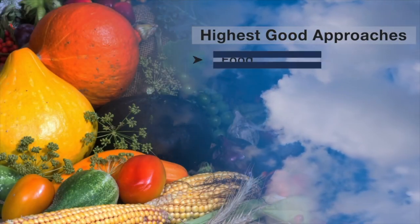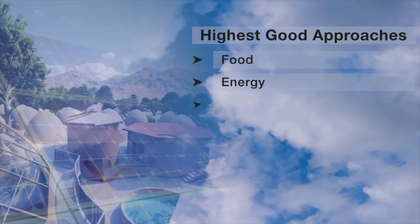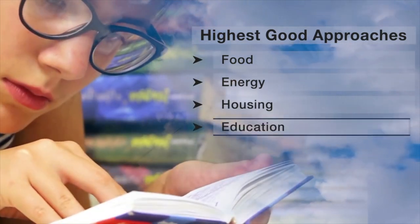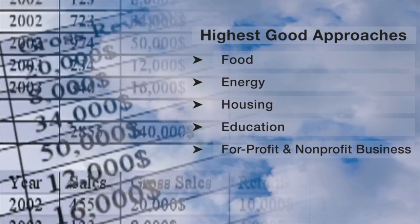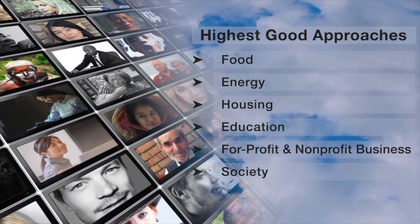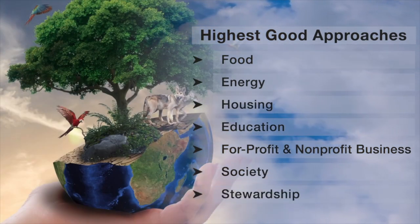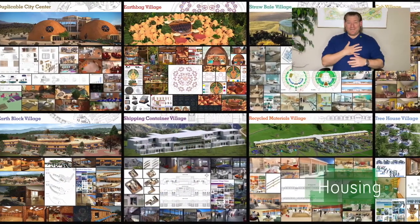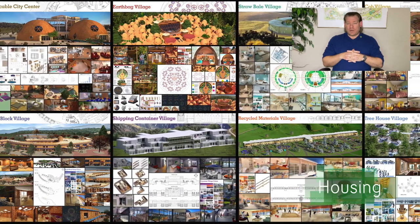This includes highest good approaches to food, energy, housing, education, for-profit and non-profit business creation, society, and true earth stewardship. Jay here again for our February 12, 23, 24 edition of our Weekly Progress Update.